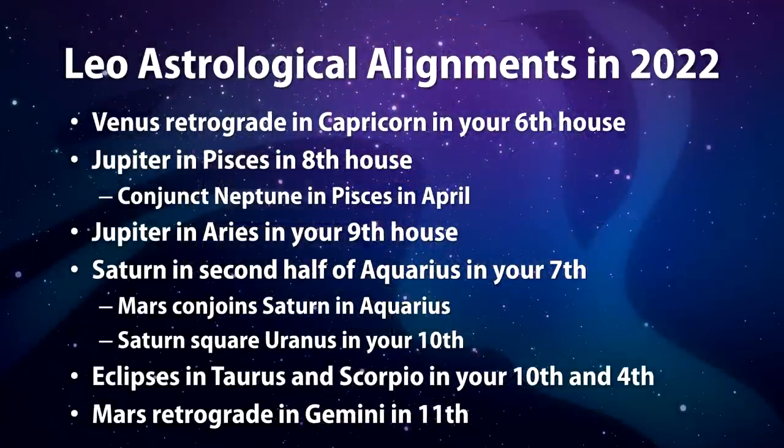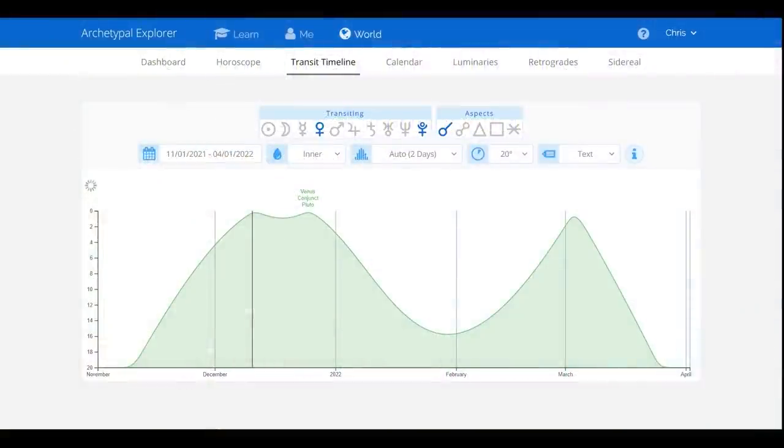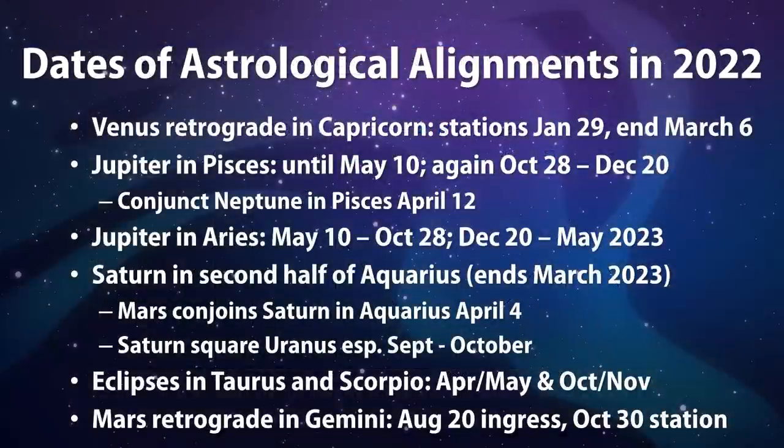We're going to start with the Venus retrograde in Capricorn in your sixth house of work and health because even though that transit started late last year in December, it's going to continue on and still be relevant into early March as long as Venus is still transiting through Capricorn. Here's another slide that lists the dates and timeframes of some of the transits.